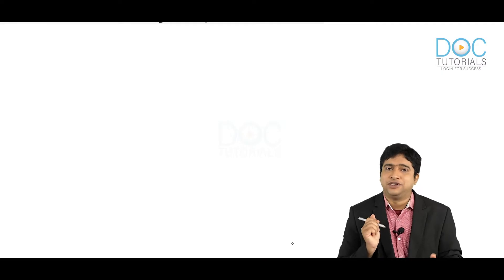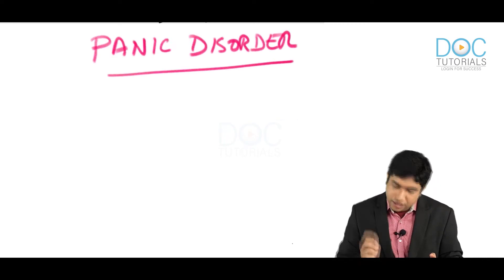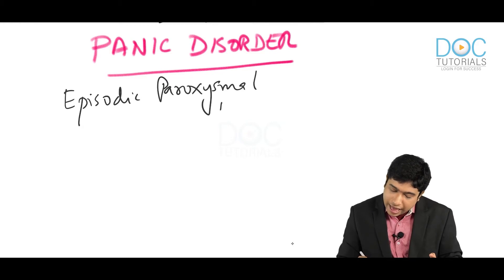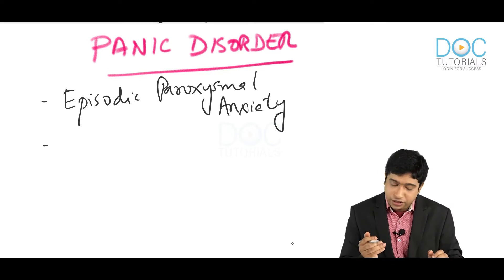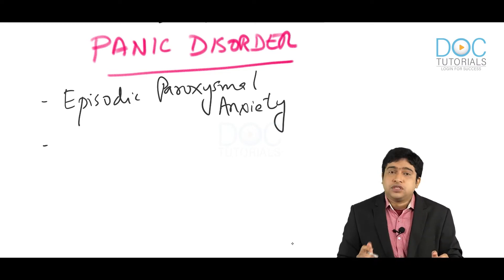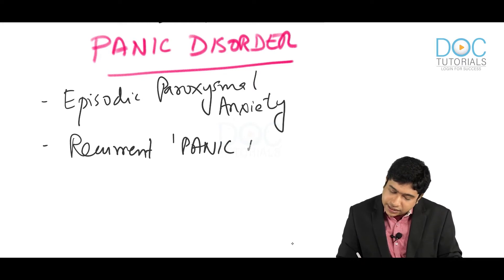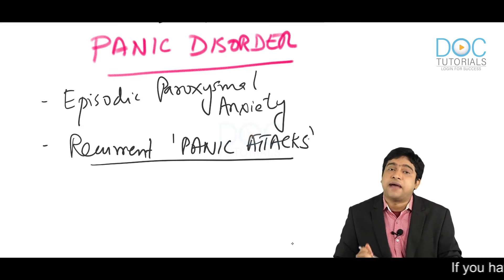Now we are going to see individual disorders. Today we are going to see panic disorder. Panic disorder is also known as episodic paroxysmal anxiety — from the name you can understand it comes like an episode. The main feature for diagnosing panic disorder is recurrent panic attacks.